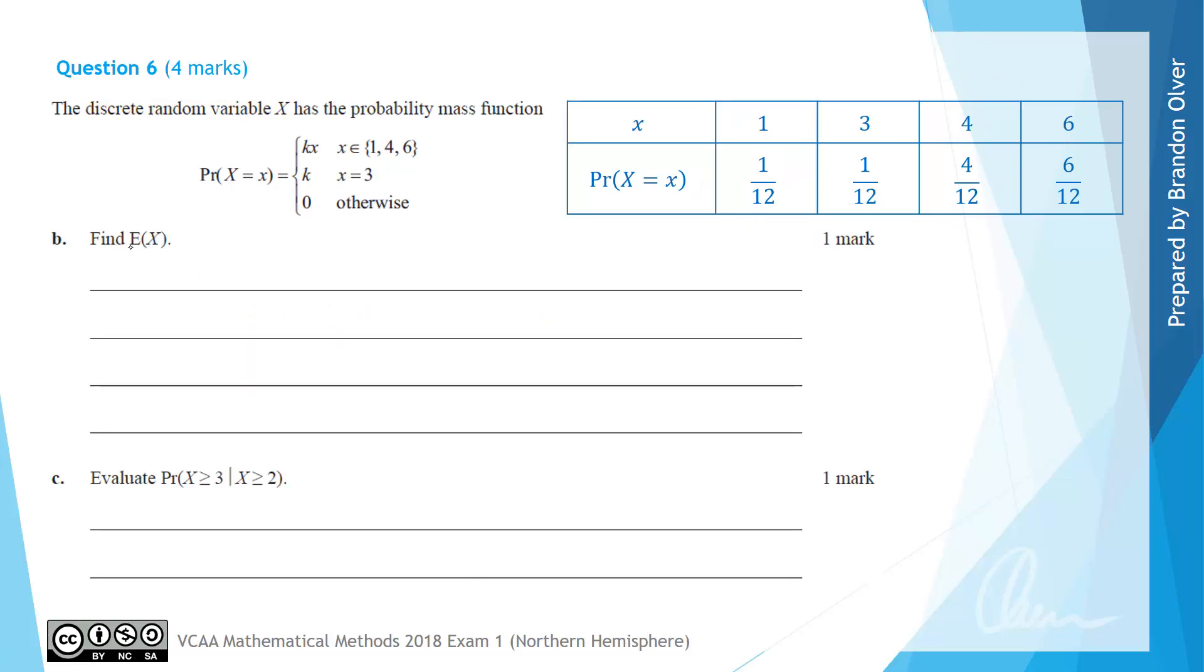And we can now move on to part B, where we're asked to find the expected value of x. And we need to remember that the expected value of x has a formula, which is on the formula sheet. And that is that we take the sum of x times p of x. So we take the x value and multiply it by its probability, and then we add all of those together.